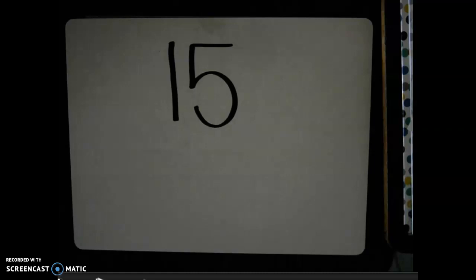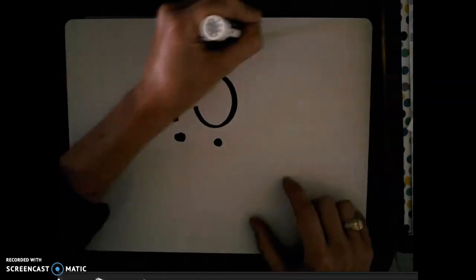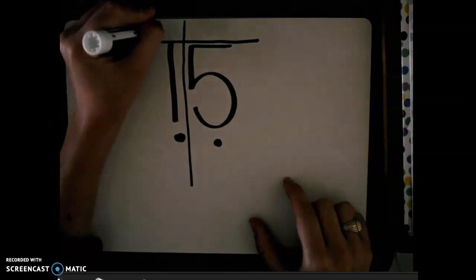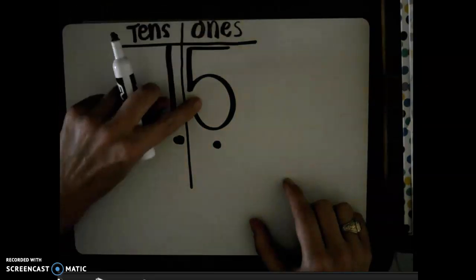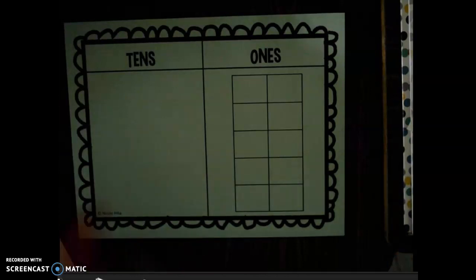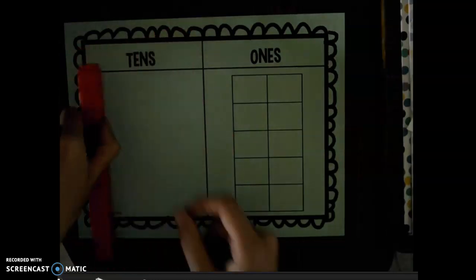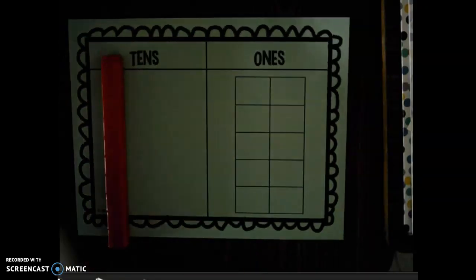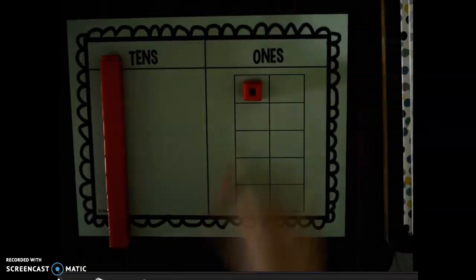Now I want to represent the number 15. The first thing I'm thinking about is: how many digits is the number 15? 15 is a two-digit number. So that means it has one number in the tens place, which represents a group of ten, and then it has five extra ones in the ones place. I know I need one group of ten — one, two, three, four, five, six, seven, eight, nine, ten — so I'm going to put my one group of ten in my tens area. And then I need five ones in my ones place, so I'm going to take five ones and place them in my ones area.